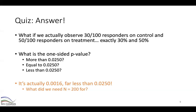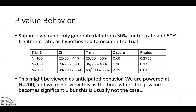To help us understand this behavior, we're going to use clinical trial simulation. Using the computer to randomly generate data, I've told it the true rate is 30% on control and 50% on treatment, just as we hypothesize. The computer recognizes there will be random variability. In the table I'm showing one example trial — not only what happens at the final analysis at 200 subjects, but also at different earlier points.